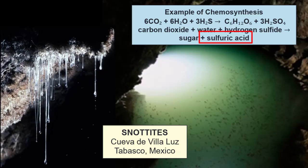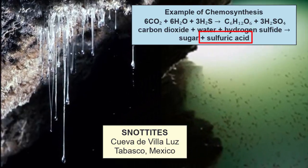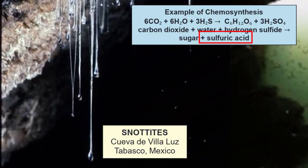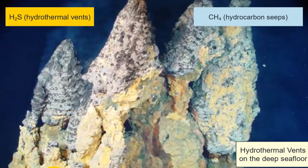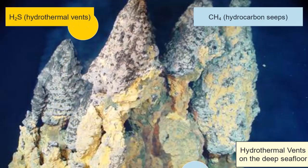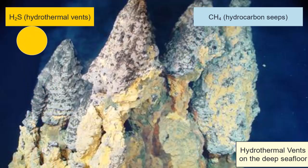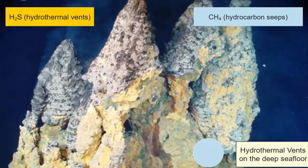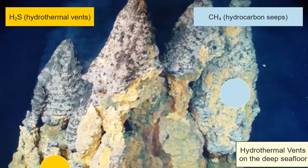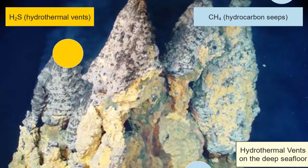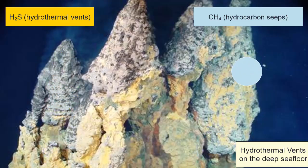This example is from Cueva de Villaluz in Tabasco, Mexico. These snotites have acid drops at their tips with a pH of zero. In hydrothermal vents and hydrocarbon seeps on the bottom of the seafloor, bacteria capture energy from hydrogen sulfide or methane gases and use that energy to synthesize sugar. These bacteria provide the base of an exotic and diverse food web.